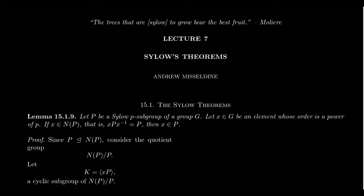In lecture 6, we introduced the notion of a Sylow-P subgroup and proved the first Sylow theorem, which basically says that Sylow-P subgroups exist. We proved that for every power of a prime that divides the order of the group, there is a subgroup of that order. Those with the maximum power of P as their exponent are necessarily Sylow-P subgroups, though we'll prove shortly in the second theorem that there aren't other ones.